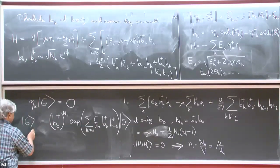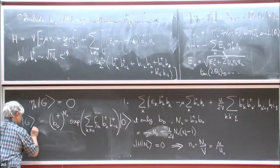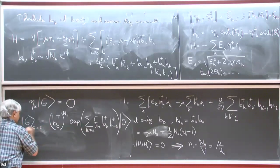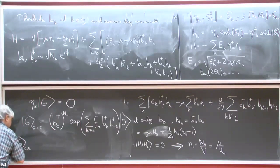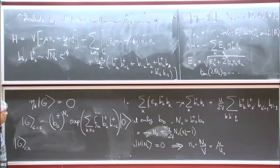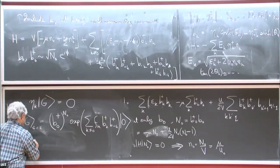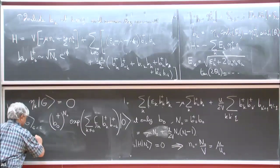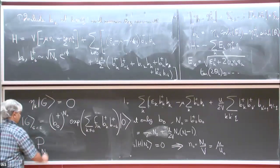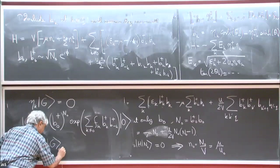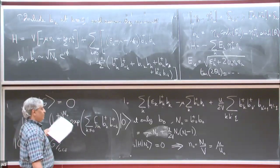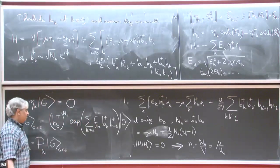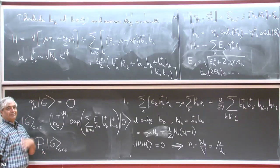This wave function has some problems: it seems to have terms with different numbers of particles. There's a term with N_zero particles, and then arbitrarily high-order terms. Whereas in any given box in a real system, the number of particles is fixed. So this is the ground state in the grand canonical ensemble. To get a ground state in the canonical ensemble, the simplest way is to just imagine you have N particles and apply a projection operator on the grand canonical state, picking out terms with exactly N particles. You can write down an explicit expression: an integral from zero to 2pi of d-phi times e to the minus i phi N.